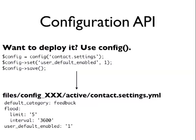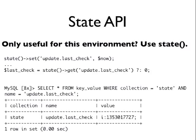There are two config directories: an active directory, which is what it actively reads configuration from, and a staging directory. When you're moving configuration from dev to production, you take it out of the active directory and chuck it into the staging directory, and there's a UI to import those — kind of similar to the Features UI. The State API is for environment-specific stuff like the API key for Amazon Web Services, or the last time cron ran. Those kinds of things we put into the State API, and it stores them in the equivalent of a variables table — but it's swappable and lazy loaded only when needed.